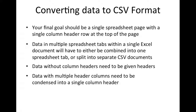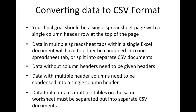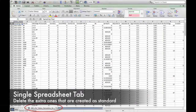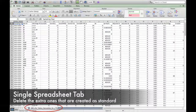Data with multiple header columns need to be condensed into a single column header. Sometimes original data has the column header first and then the next row contains a unit of measurement or other description. This descriptive information can be recorded in your data dictionary or put into a description column that you create for this purpose. Data that contains multiple tables on the same worksheet must be separated out into separate CSV documents. In the end, you want each CSV to be a self-contained spreadsheet with no other extraneous information and no other spreadsheet tabs.